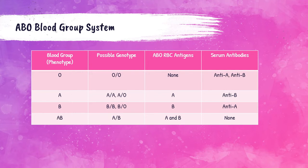For the A blood group, their genotype can either be AA, meaning they inherit an A gene from both parents, or AO, meaning they inherit one A gene from one parent and one O gene from the other. Since the O gene is a silent amorph, it doesn't express, so just the A gene does. They have A antigens present on their red blood cells and naturally occurring anti-B antibodies in the serum. So if an A blood type person receives blood from a B blood type person, their anti-B antibodies will agglutinate to the B antigens and cause a transfusion reaction.